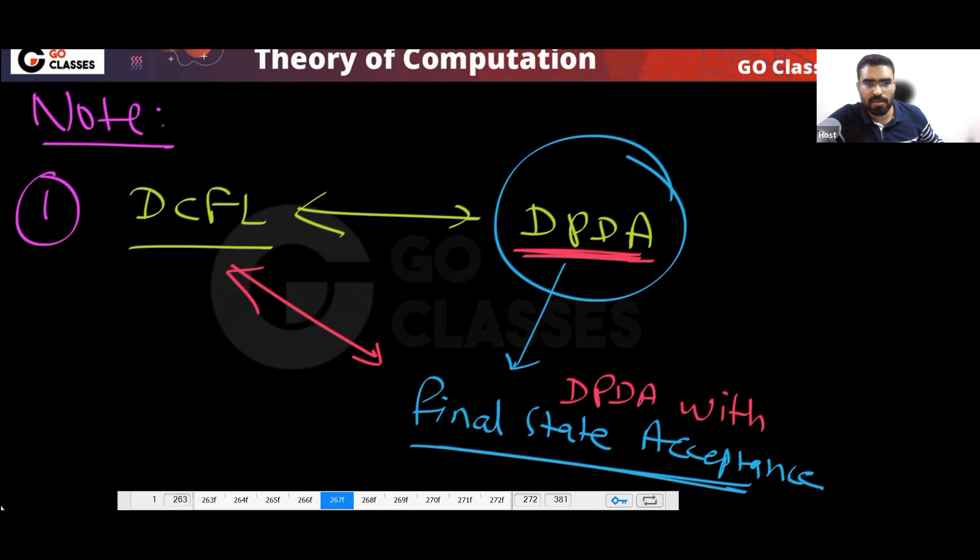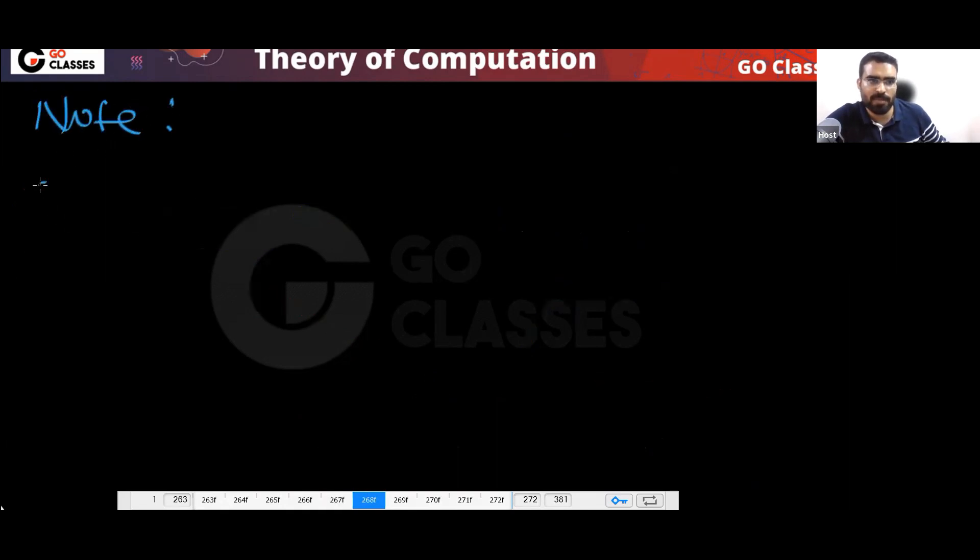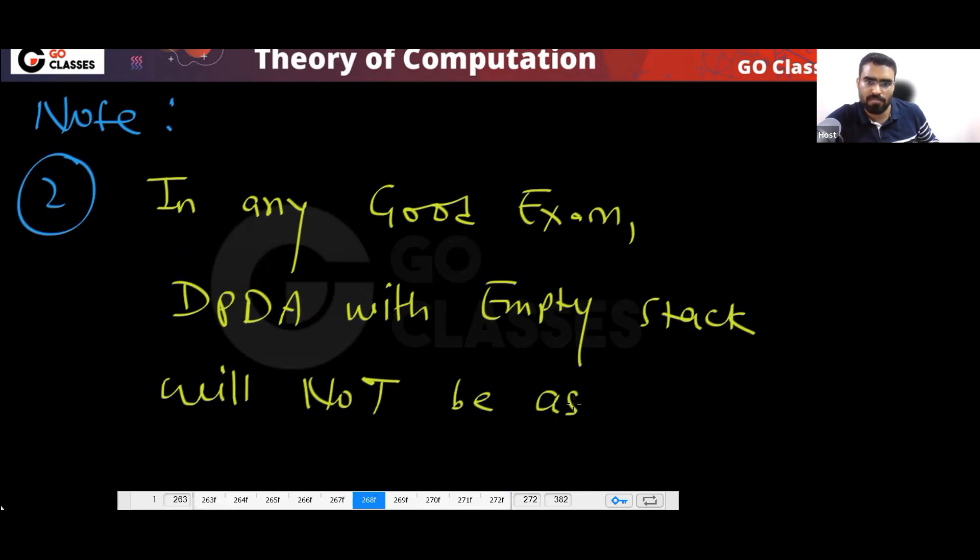Second point: in a good exam, they will not ask you this. We have seen Sipser, Hopcroft, Kozen, ISC notes, and Stanford notes — five resources total with complete analysis. So please don't fight on GeeksForGeeks, any website, any Telegram or WhatsApp group with your friends. If some people are fighting, just don't say anything — let them fight. Or you can say 'join Go Classes.'